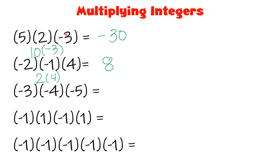In the first example, there is only 1 negative sign, and 1 is an odd number — that's why our answer is negative. In the second example, we have 2 negative signs, and 2 is an even number, so the answer is positive. Now in the third example, how many negative signs do we have? We have 3 negative signs, and 3 is an odd number, so the answer must be negative. Multiplying 3 times 4 gives 12, times 5 gives 60 — so the answer is negative 60.